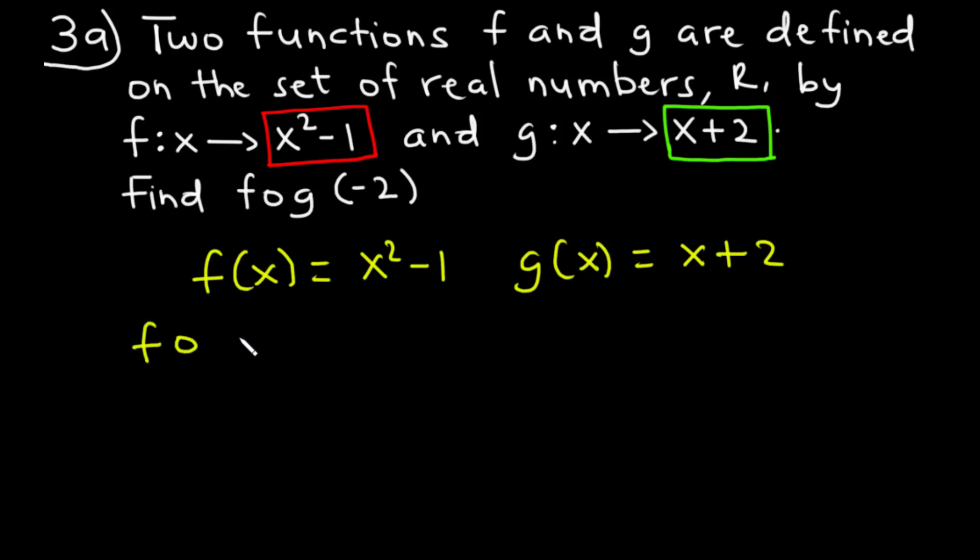f∘g is the same as f[g(x)]. We consider f(x) as the bigger function and g(x) as the smaller function inside f(x). Let's replace g(x) with x + 2, so we have f(x + 2).